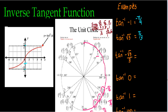Inverse tangent of negative square root of three over three — this is pi sixths. Since the value is negative, I know I'm in quadrant four, not quadrant two. So since it's negative, this belongs to pi sixths and the answer is negative pi sixths. We can confirm that pi thirds is within pi halves and negative pi halves, and pi sixths is also very close and within the accepted range.